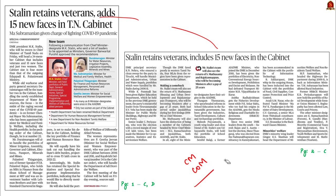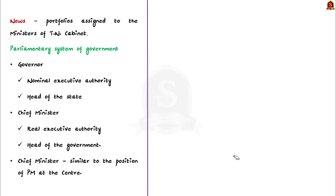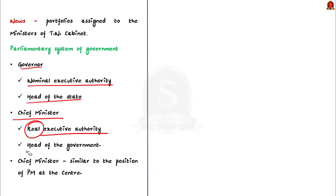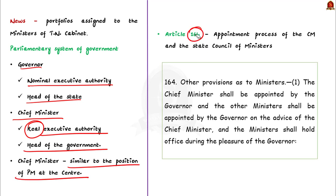This is very important from the polity point of view. In the parliamentary system of government, the governor is the nominal executive authority or head of the state, while the Chief Minister is the real executive authority or head of the government. The position of Chief Minister at the state level is similar to the PM at the center. Article 164 of the Indian Constitution deals with the appointment process of the CM and the state council of ministers. The constitution does not contain any specific procedure for their appointment except that the Chief Minister shall be appointed by the governor.